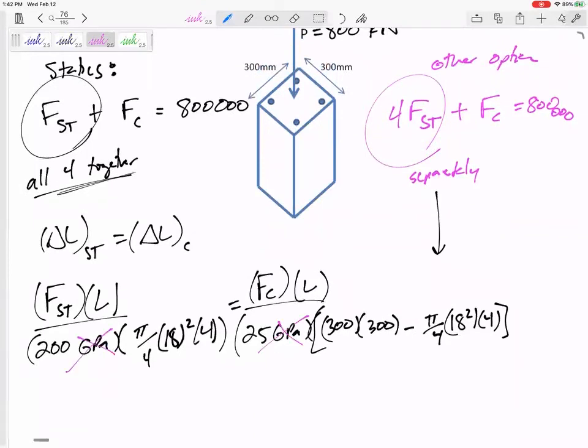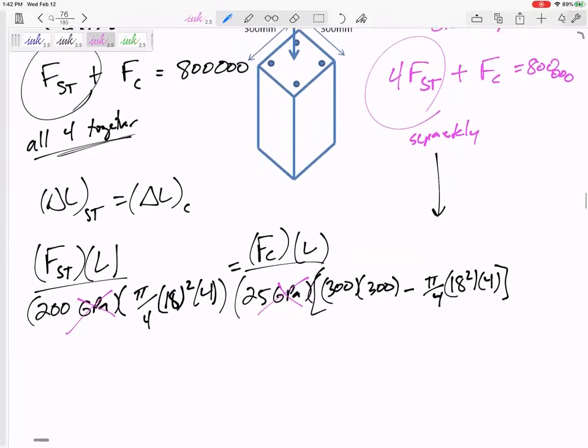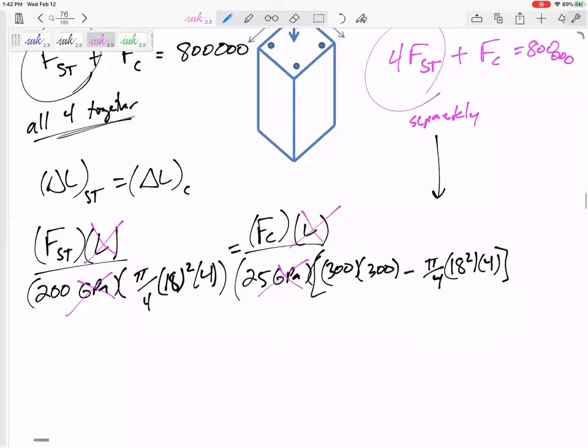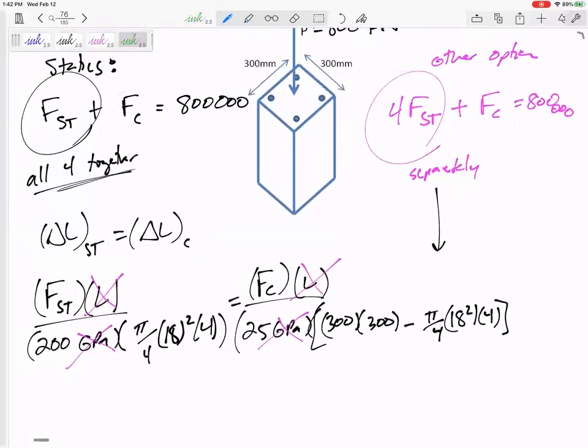So do you see why I could have changed the 200 to 200,000? I could have changed the 25 to 25,000. But if I was really smart, I would realize I'm just multiplying both sides of the equation by 1,000. So why not keep them smaller? The length, it didn't tell me the length, but does it matter? Just give it a length. Maybe it's 10 meters. It's 10 for both of them. So those divide out on both sides of the equation.